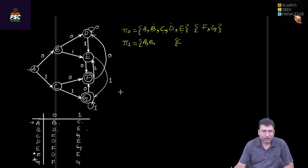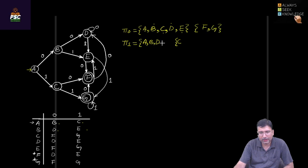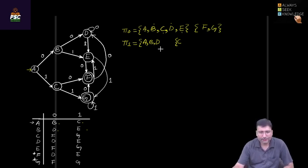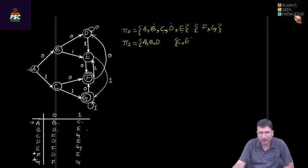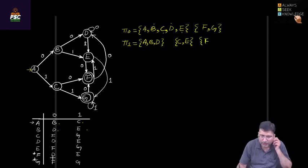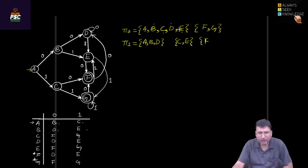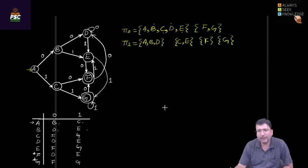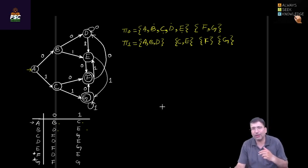Checking d: it leads to d for zero and e for one — both belong to the non-final set, so d is in one-equivalence with a and b. Checking e: it leads to f and g, similar to c, so e will be in one-equivalence with c. For f and g: f leads to d and e (non-final set), while g leads to f and g (final set) — they are not in the same equivalence, so f and g are separated into different sets.